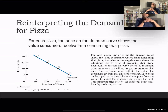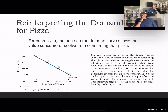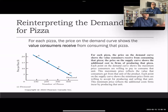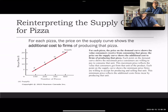For example, we are re-interpreting the demand for pizza. This demand curve for pizza reflects that for each pizza, the price on the demand curve shows the value the consumer receives from consuming that pizza. At point A, 100 consumers are deriving a benefit of $20 — the value of the pizza equals $20. At point D, 400 consumers are placing a value of $5 per pizza.